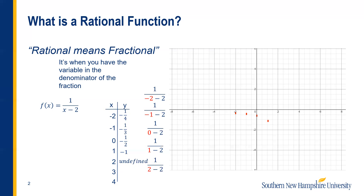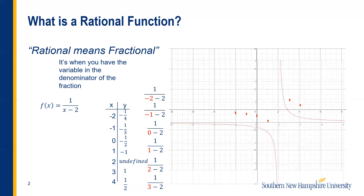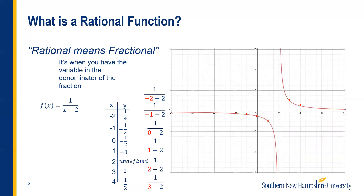Let's keep going and see what happens when we plug in 3. I'll have 1 over 1, which is now 1. So suddenly we've jumped up above the x-axis and now we've got some positive numbers. If I plug in 4, I get one-half. So I went over to Desmos — Desmos.com is a free online graphing calculator — and I typed in f of x equals 1 over x minus 2. Here's the graph I got, and the points we were creating are right there on it.